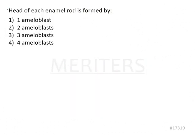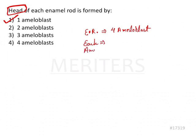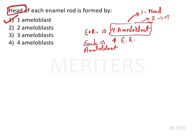Coming back to the main question — the head of each enamel rod is formed by: since they asked only about the head, the head is contributed by only one ameloblast. If the question were about one full enamel rod, the answer would be four ameloblasts total. Each ameloblast also contributes to four enamel rods. Out of these four, one forms the head and three form the tail. So the answer to this question is one ameloblast.